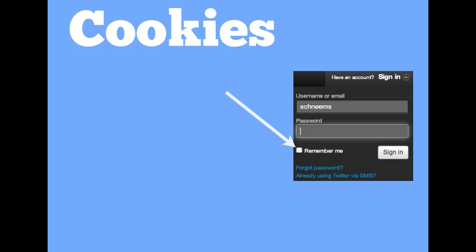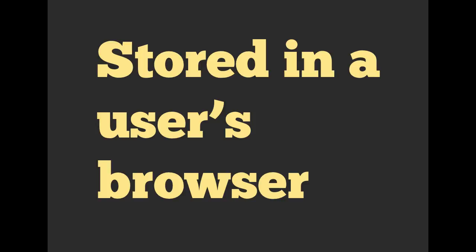You might have seen something like this — a little checkbox that says 'remember me.' Whenever you check that, we are going to set a cookie in your browser. It's actually going to store some information locally in Firefox, Safari, or Chrome. And every single time you submit a request after that, we are going to send that same piece of information back to the server.